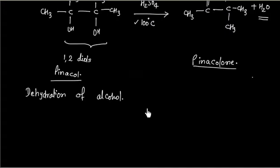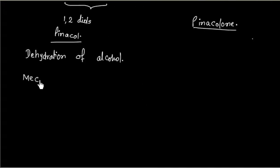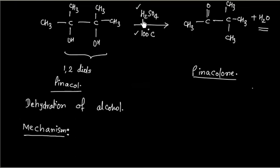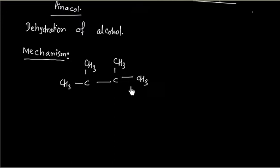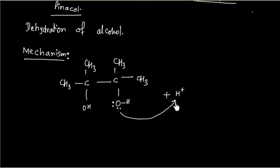If you consider the mechanism of this reaction, the first step is protonation of the OH group. We have an OH group and H+, so in the first step we can protonate. This oxygen has a lone pair of electrons, so it can take H+ to form a protonated alcohol.